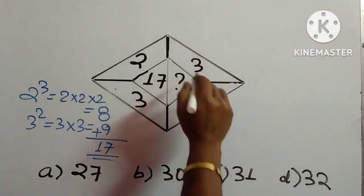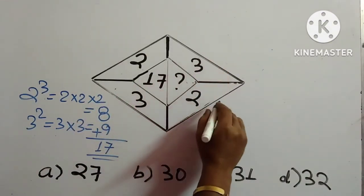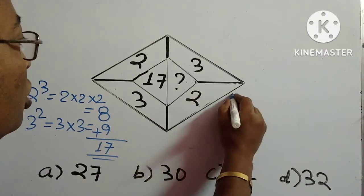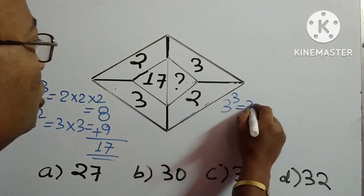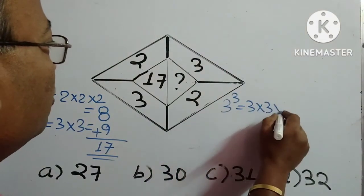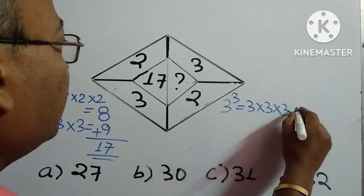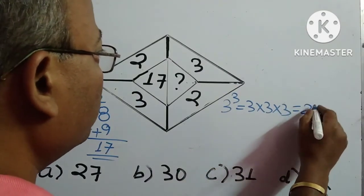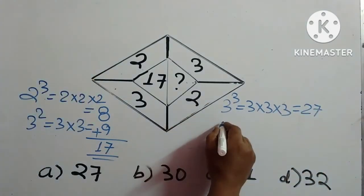So accordingly we have to follow. So for the first number what we have to do: 3 cube, so 3 into 3 into 3, so 3 times 3 is 9, 9 times 3 is 27. And for the second number